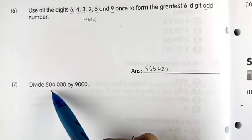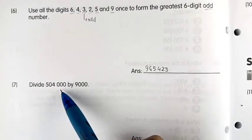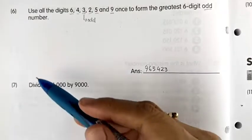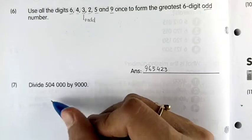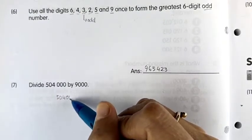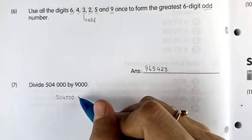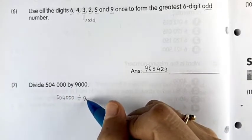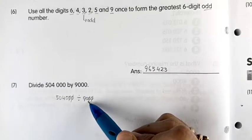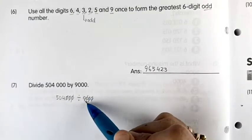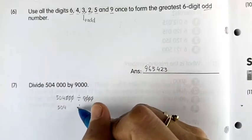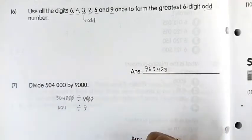Number seven: divide 504,000 by 9,000. We simplify by dividing 504 by 9, and the result is 56. So 504,000 divided by 9,000 equals 56.